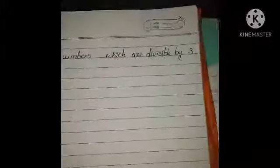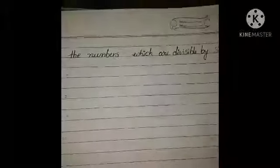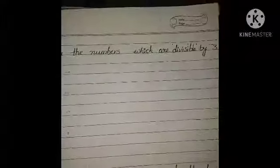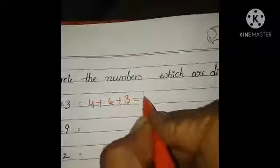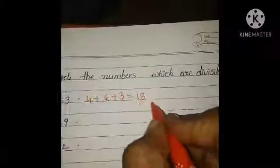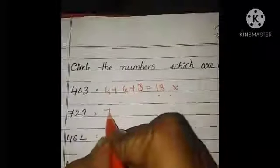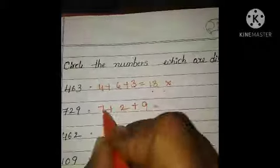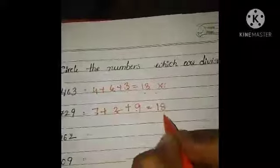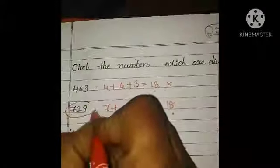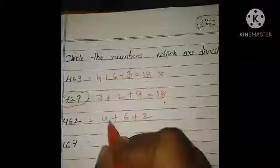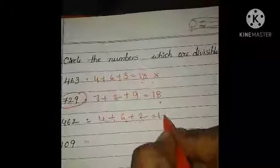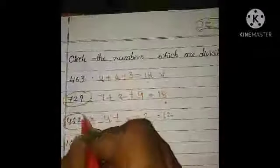Circle the numbers which are divisible by 3. The divisibility rule for 3: the sum of the digits must be divisible by 3. For 463: 4 plus 6 plus 3 equals 13 — 13 is not in the 3 table, so not divisible. For 729: 7 plus 2 plus 9 equals 18 — 18 is in the 3 table, so circle it. For 462: 4 plus 6 plus 2 equals 12 — 12 is in the 3 table, so also divisible by 3.